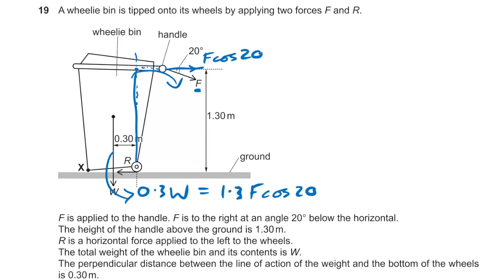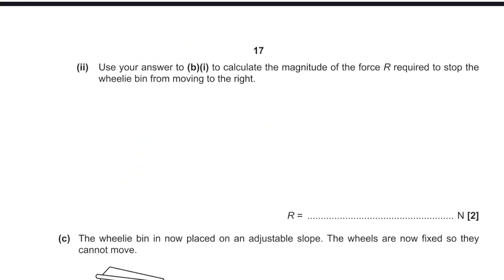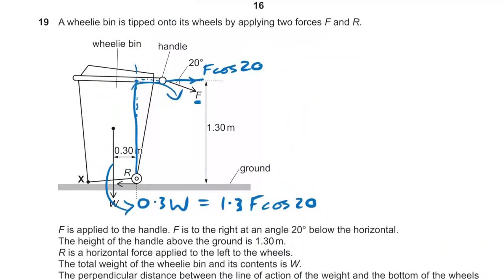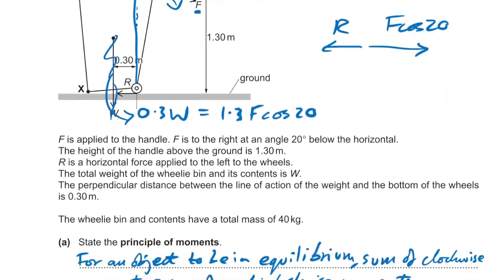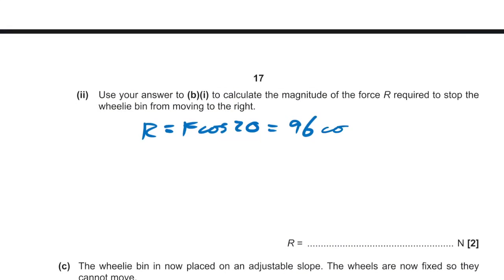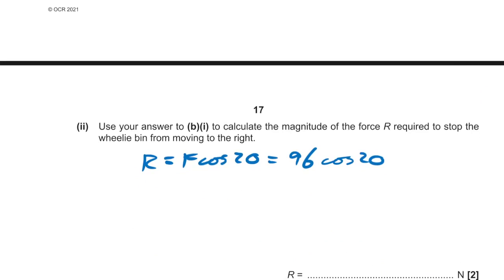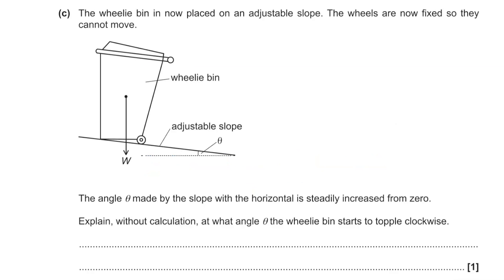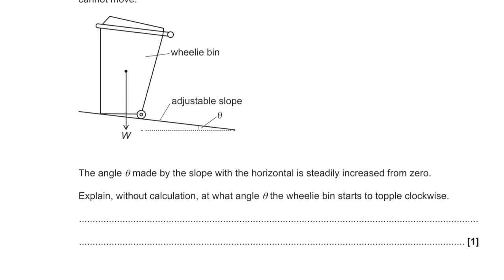To find the horizontal reaction force R at the base: there's no horizontal component of the weight, so R = F cos20° = 96 × cos20° ≈ 90 N. For the toppling question: the wheelie bin starts to topple clockwise when the line of action of the weight passes to the right of the pivot.